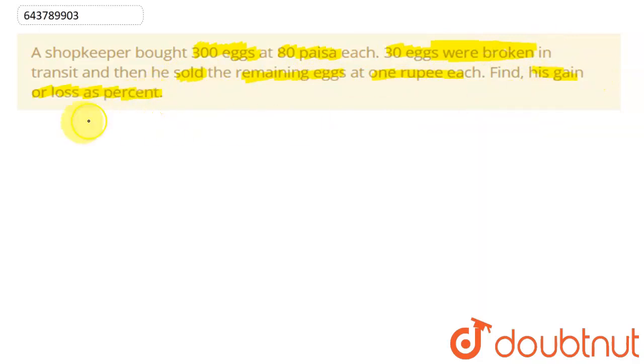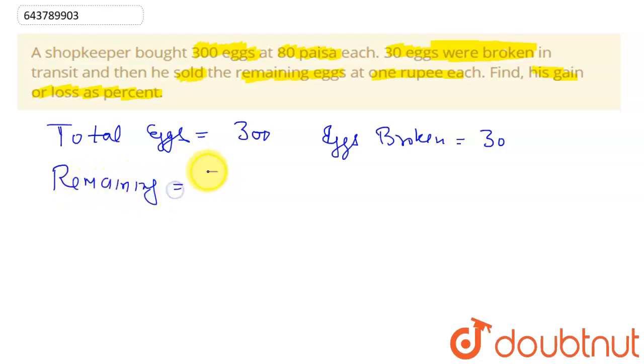So there are total eggs that he bought was 300. And what are the number of eggs broken? Eggs that are broken are given as 30. So the remaining eggs is equal to 300 minus 30, which will be equal to 270.